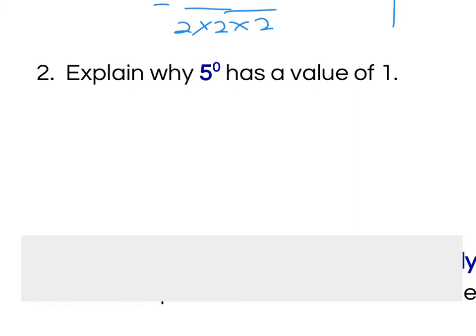Well, one thing that I could do is I could say, well, if I have 5 to the power of 2 divided by 5 to the power of 2, my exponent laws will tell me that that's equal to 5 to the power of 2 minus 2, which is 5 to the power of 0, right?